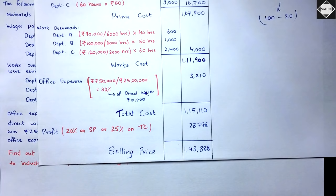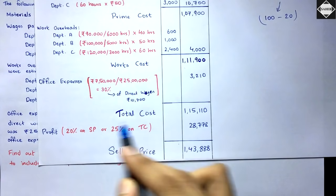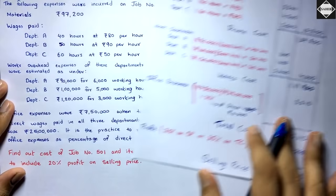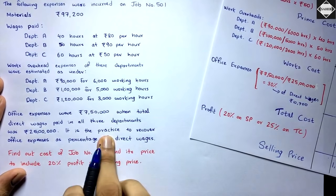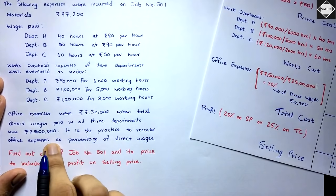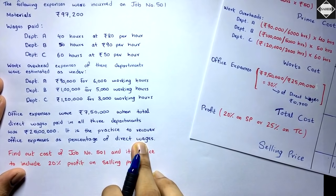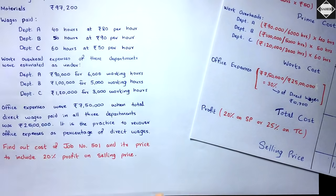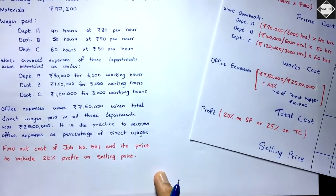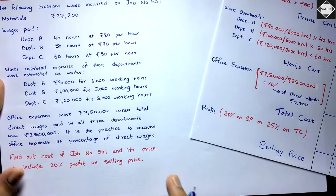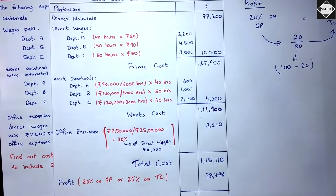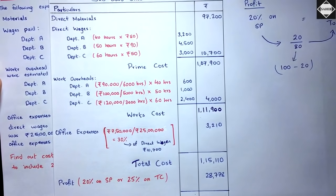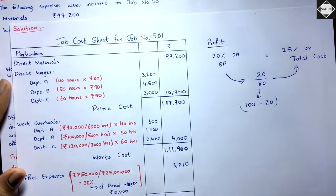The new concept in this video was the office expenses recovery. The recovery percentage wasn't given directly — we had to calculate it from past data (₹7,50,000 / ₹25,00,000 = 30%), then apply it to the current job's direct wages to find office expenses. That's how you handle it. See you in the next video!